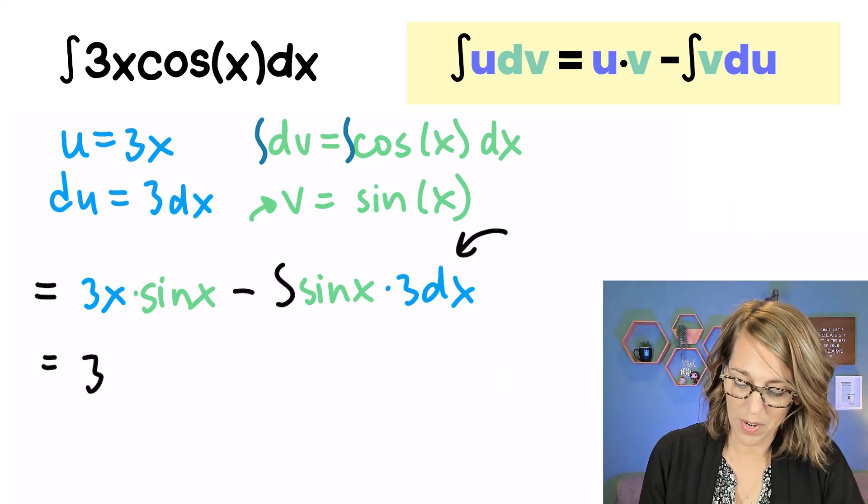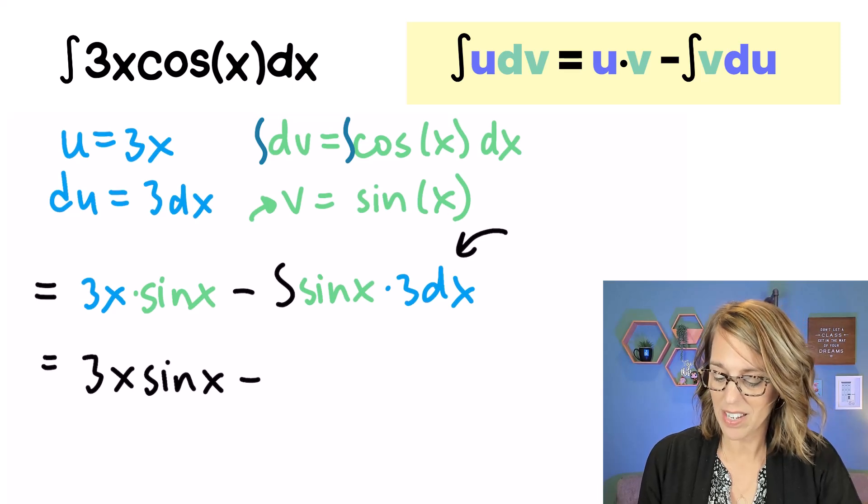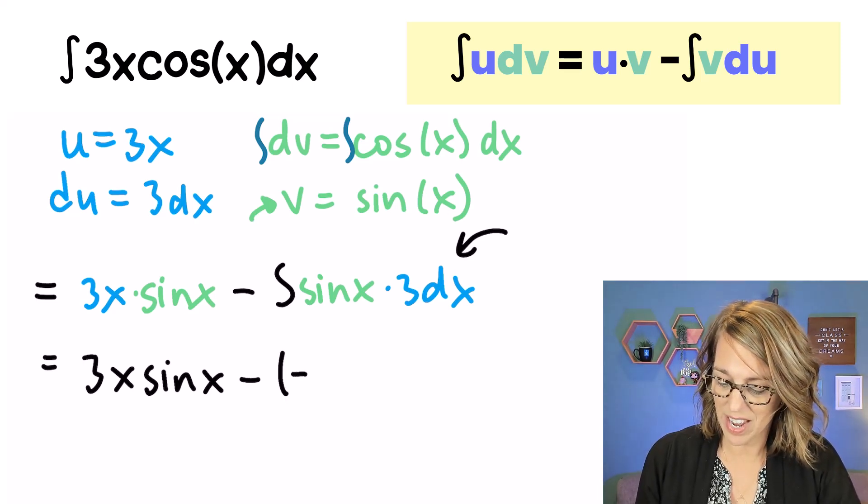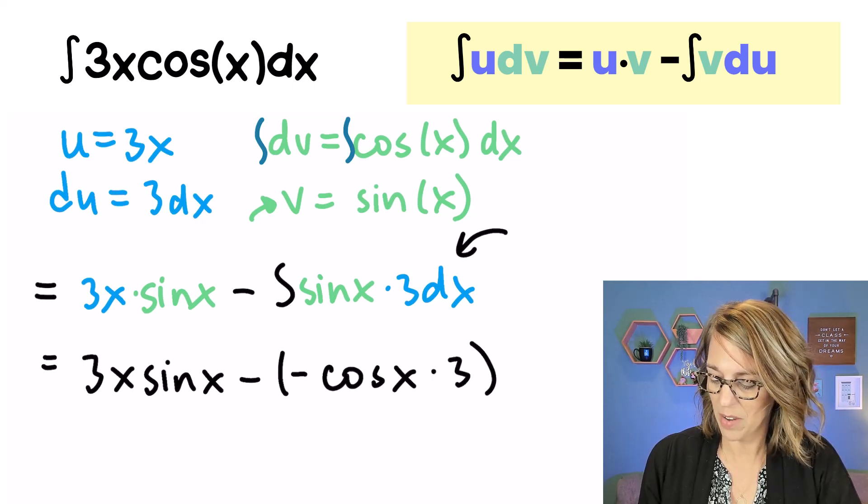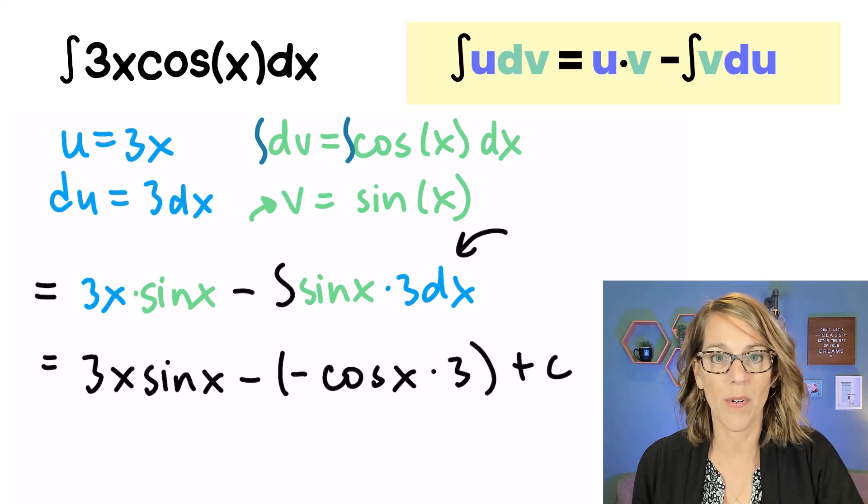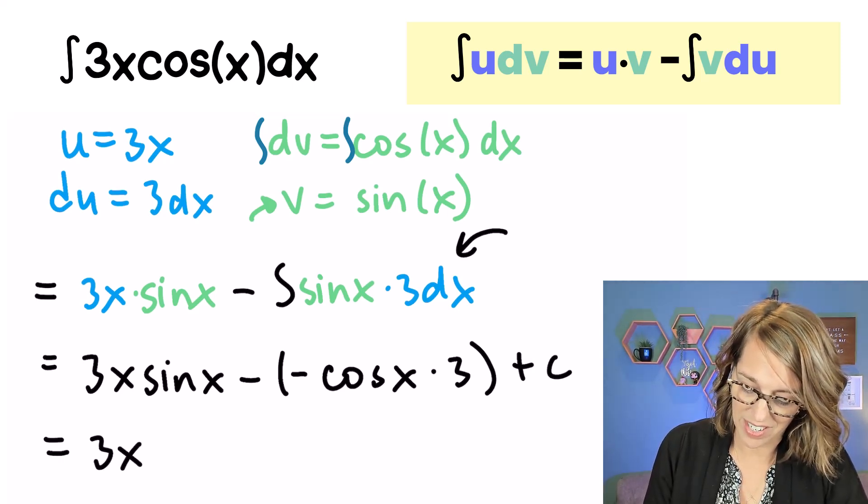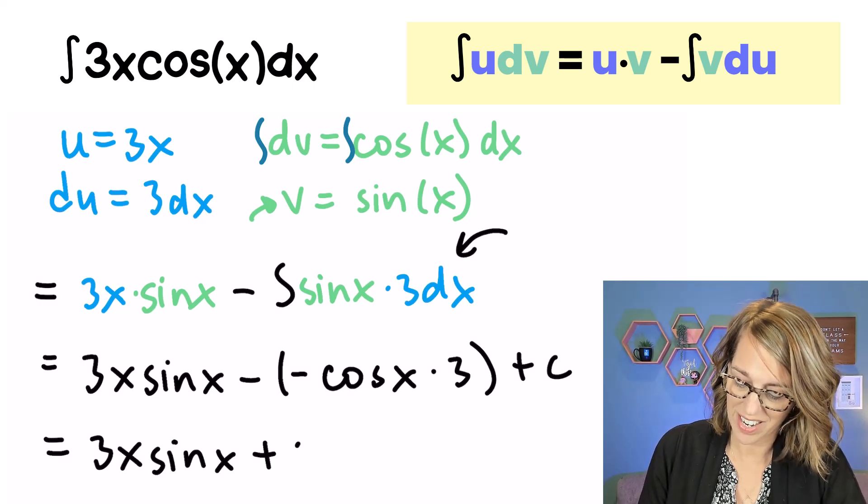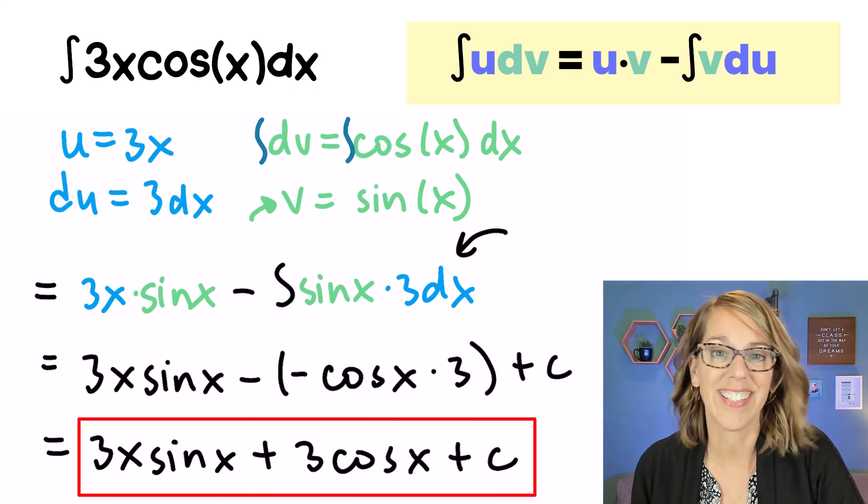So I'm going to just rewrite what I had there. 3x times the sine of x minus. Let's go ahead and find the antiderivative of sine. That's going to be a negative cosine x. I still have that 3 on the outside. And I should probably throw in that plus c. So as I simplify, my answer is 3x sine x plus 3 cosine x plus c.